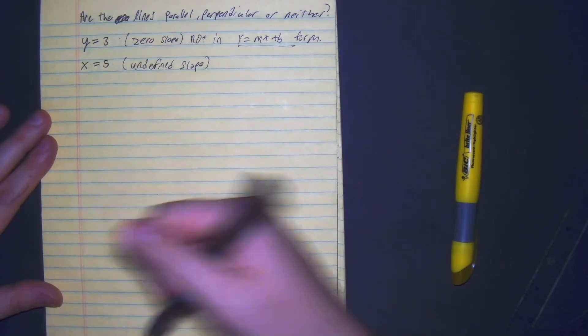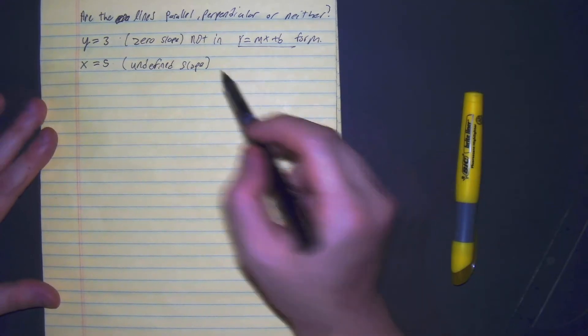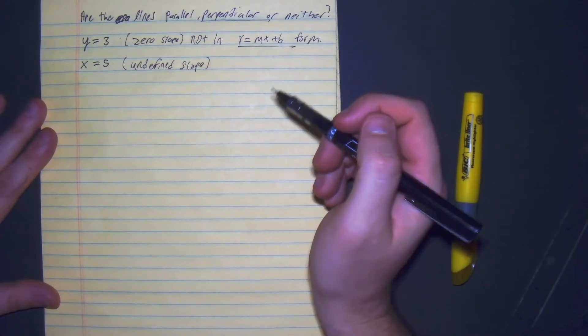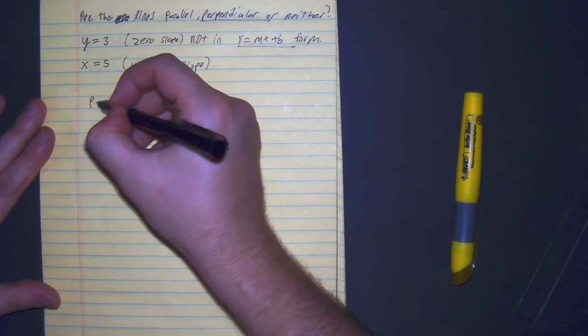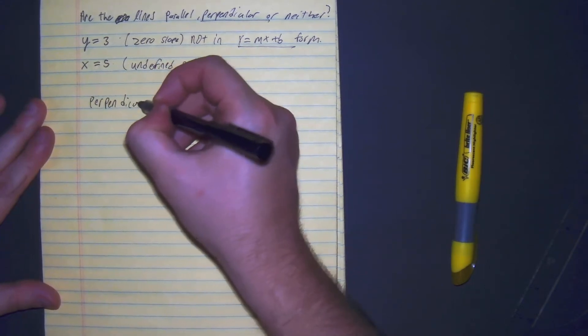Zero slope and undefined slope - they're special cases. And right away I know, based on the information, they're perpendicular. We'll give a visual of why they're perpendicular here in a moment.